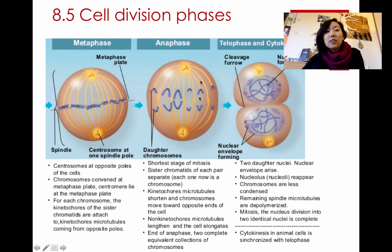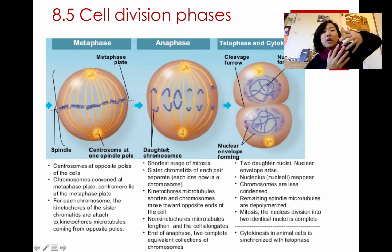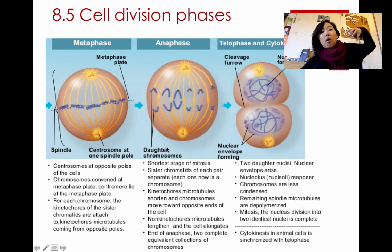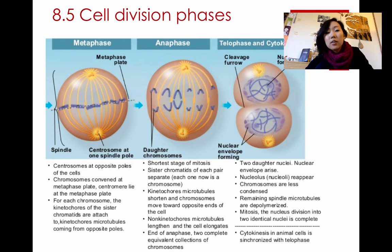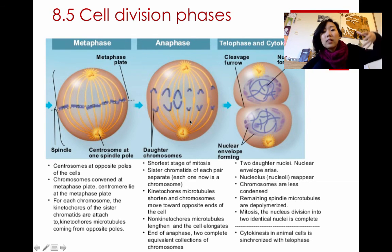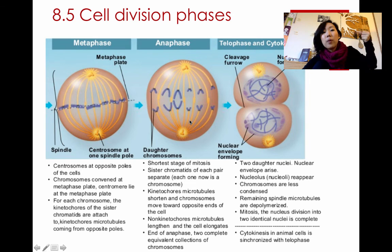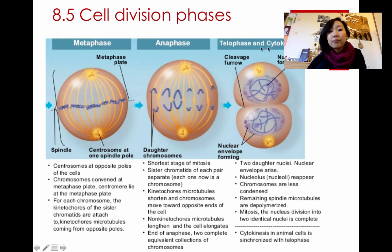In the next phase called anaphase, the mitotic spindle actually starts to pull apart the sister chromatids and they start moving to the opposite ends of the cell. This is the equivalent of the cell elongating and starting to pull apart, dividing the DNA material.